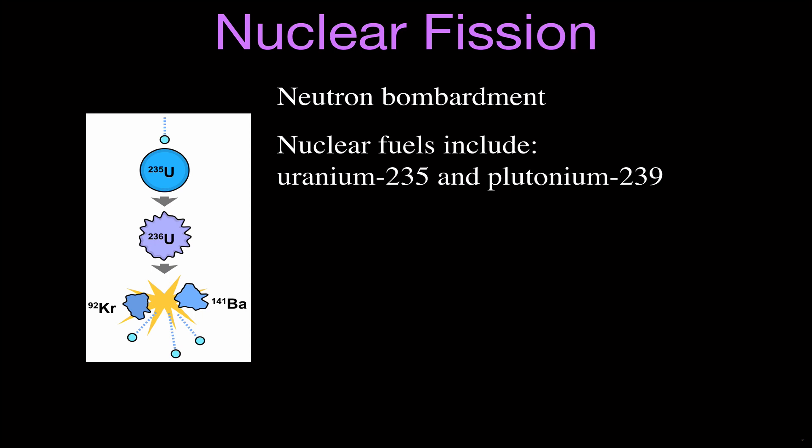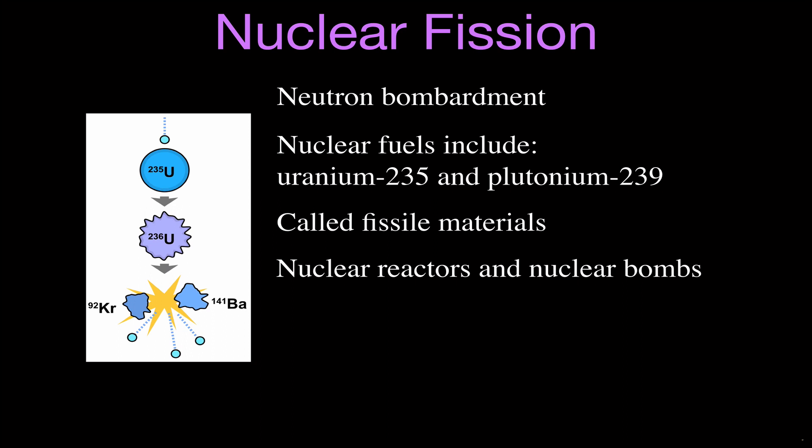Common fuels for neutron bombardment — common fissile materials — are uranium-235 and plutonium-239. In the next video we're going to calculate the binding energy and the mass defect for the fission of plutonium-239. These materials are called fissile materials, and this is how we power nuclear submarines, nuclear reactors, and nuclear bombs. It's that energy through neutron bombardment that we want when we want to have a nuclear power plant, and unfortunately, when we want to make a bomb.